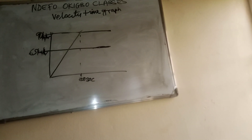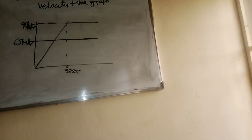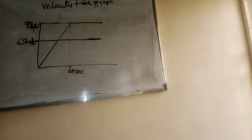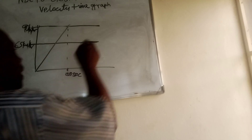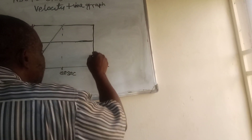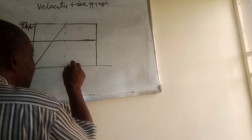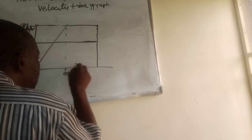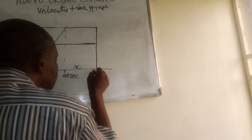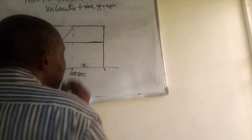What is the distance traveled by the second car at the time of overtaking? Before overtaking, they must meet somewhere. The time we are looking for is this time X.